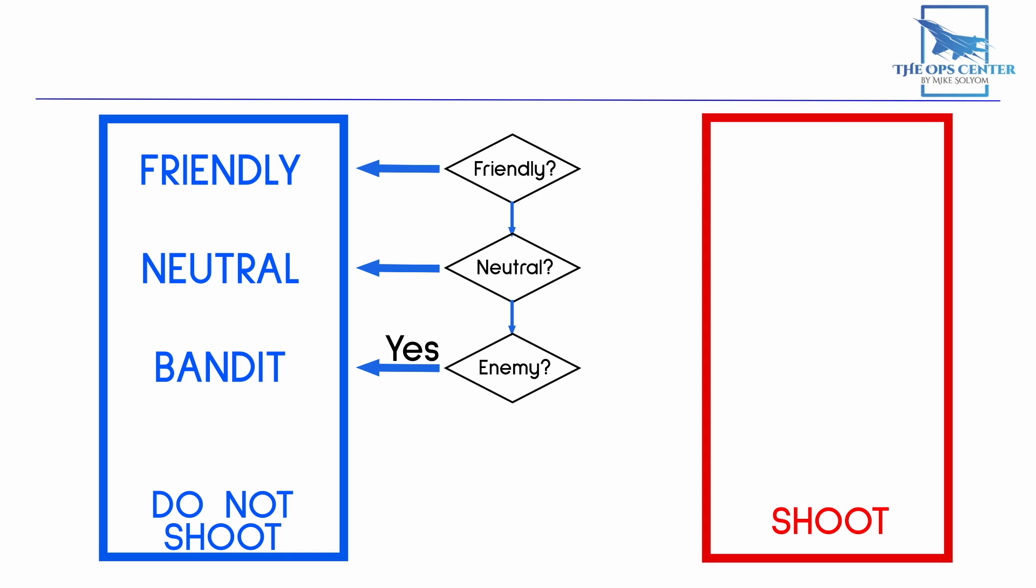One is that an enemy may be operating in an area where shooting at it is off-limits. An example of this would be an adversary flying over international waters. Yes, they are the enemy, but neither side wants to start hostilities.